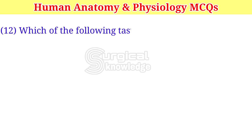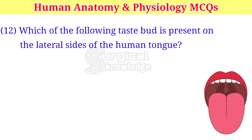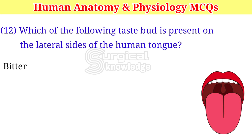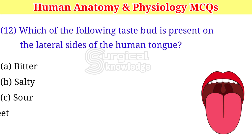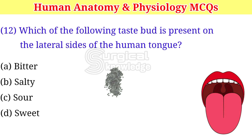Which of the following taste bud is present on the lateral sides of the human tongue? A. Bitter. B. Salty. C. Sour. D. Sweet.